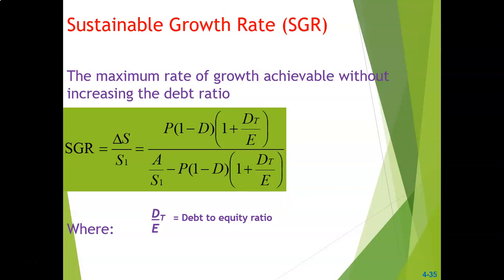Let's look at the sustainable growth rate — it is the maximum amount of growth achieved without increasing the debt ratio. If you want to maintain the debt ratio — in our case 1.18 times — this formula will determine the maximum amount that can be borrowed without increasing that debt ratio.